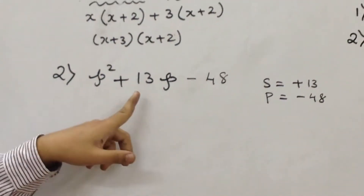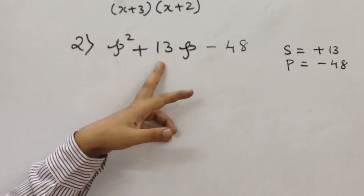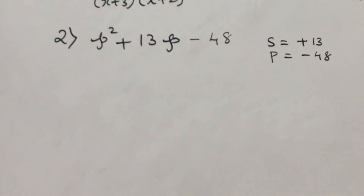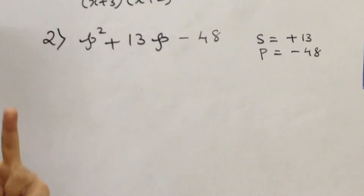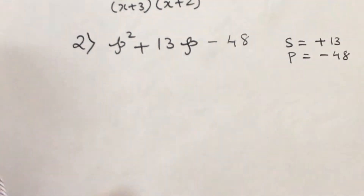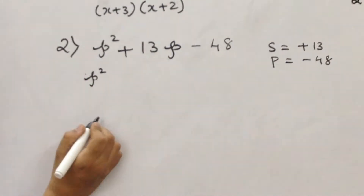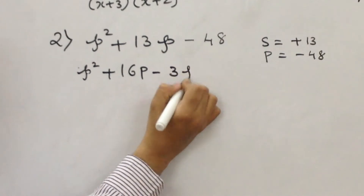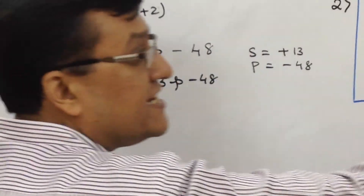Now you have to correlate: is there a relation between 16 and 3 so as to get 13? Indeed yes — 16 minus 3 equals 13. So the first term remains the same: p squared, then plus 16p minus 3p minus 48. The bigger number is plus, the smaller number is minus.